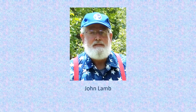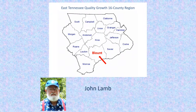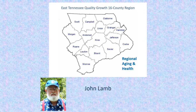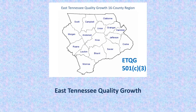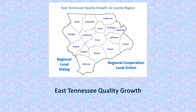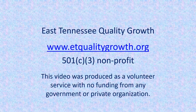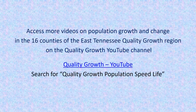Hi, I am John Lamb, producer of Aging at the Speed of Life and the narrator for this presentation. I am retired after almost 22 years as Blount County Director of Planning and I continue activity in local groups addressing the issues of aging and health. I am also member of similar groups at the regional level in East Tennessee and I am president of East Tennessee Quality Growth, or ETQG, covering 16 counties. East Tennessee Quality Growth is a 501c3 non-profit organization with mission to promote regional and local dialogue along with regional cooperation and local action. This video was produced as a volunteer service with no funding from any government or private organization. You may access more videos on population growth and change in the 16 counties of the East Tennessee Quality Growth region on the Quality Growth YouTube channel.